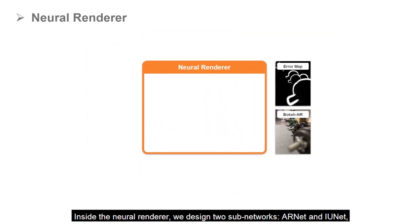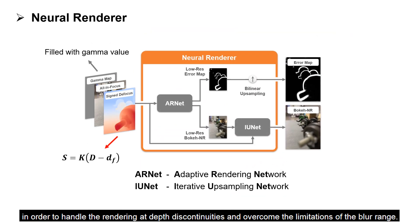Inside the neural renderer, we design two subnetworks, ARNet and IUNet, in order to handle the rendering at depth discontinuities and overcome the limitations of the blur range.